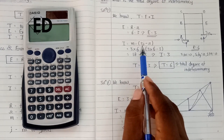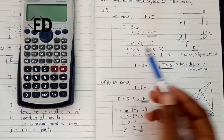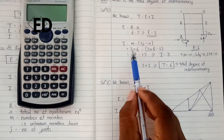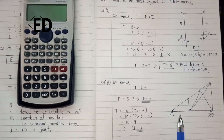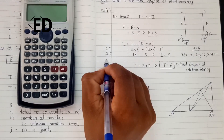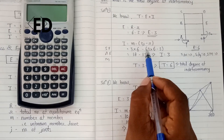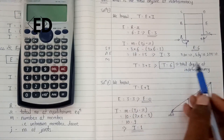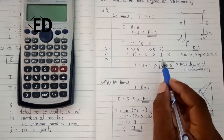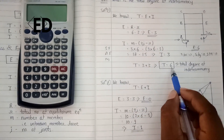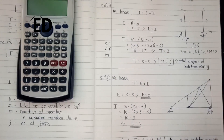Now for the internal indeterminacy, we use the formula m minus (3j minus r). Members: first, second, third, fourth, fifth, sixth — we have six members. We multiply by three because this is a frame structure and each member carries three forces: shear force, axial force, and moment. So: 3 × 6 minus 3 × 6 joints (one, two, three, four, five, six) minus three equilibrium equations gives 18 minus 15 equals three. So internal indeterminacy I equals three. Total: T equals E plus I equals three plus three equals six. The total degree of indeterminacy of this frame structure is six.